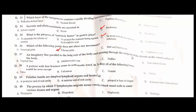An imaginary line parallel to the long axis of the body and passing through the midpoint of the clavicle on the ventral surface of the body is the midclavicular line. B is the correct option.